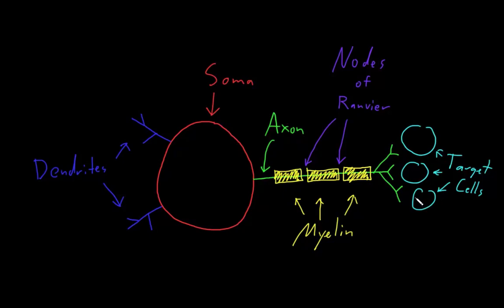A few neurons even have axons that terminate on capillaries to secrete substances called hormones into the bloodstream. The place where an axon terminal comes close to touching the target cell is called a synapse.